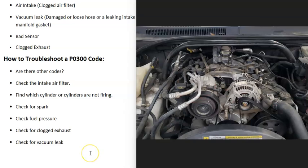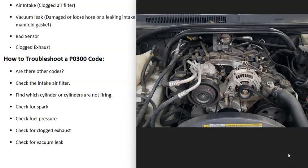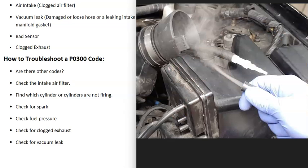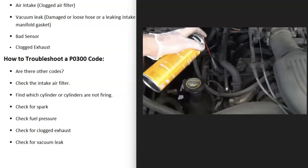Also check for a vacuum leak or intake air leak. All air should be going in through the throttle body — if air is sneaking in around it through a loose hose or bad gasket, that can cause a P0300 code. To find a vacuum leak, you can visually inspect hoses for damage or disconnection. Another method is using a smoke machine: feed smoke into the intake and wherever it comes out is where the leak is. Some mechanics use starter fluid spray — with the engine running, spray near suspected leak areas and if the idle changes, you've found the leak.